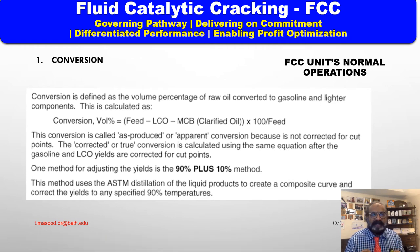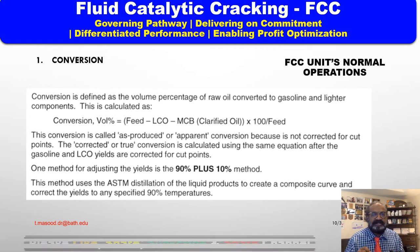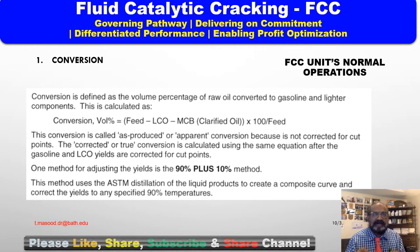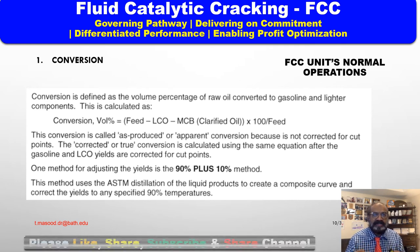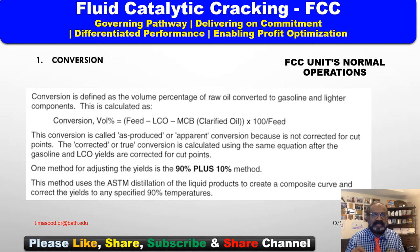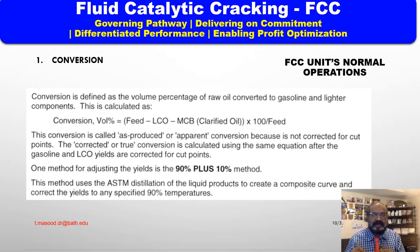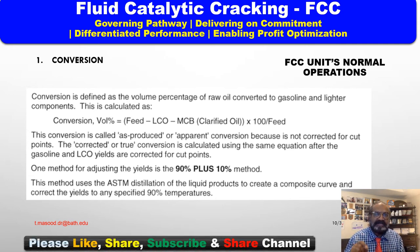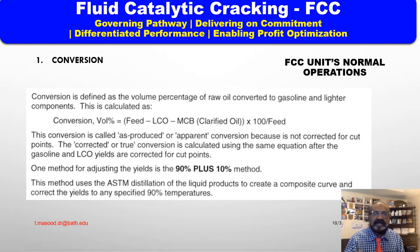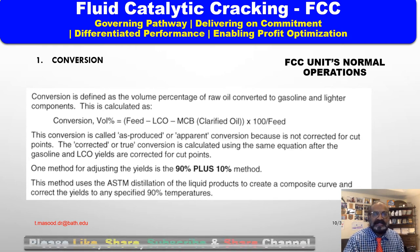One method for adjusting the yield is the 90% + 10% method. This method uses the ASTM distillations of the liquid products to create a composite curve and correct the yield to any specified 90% temperature.